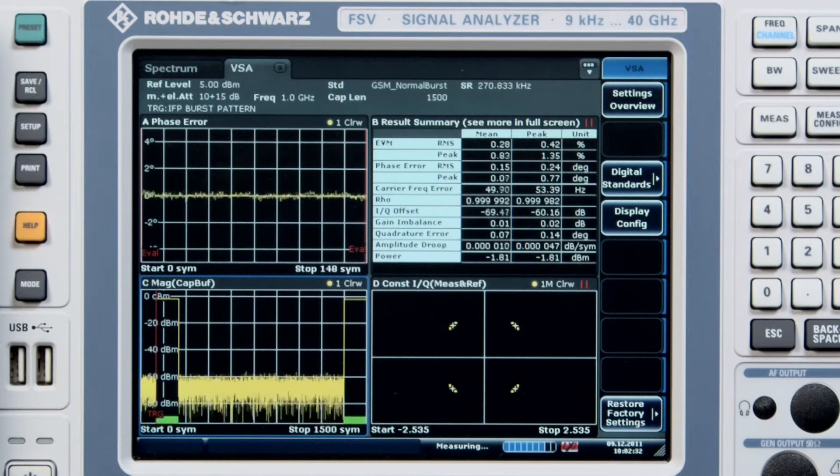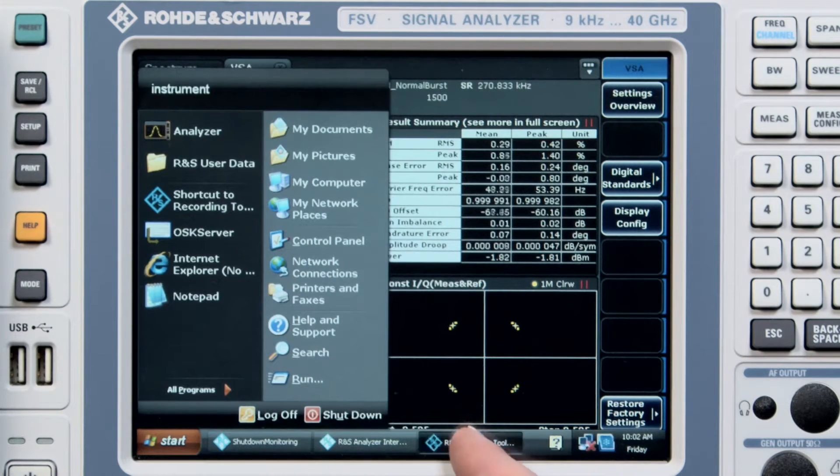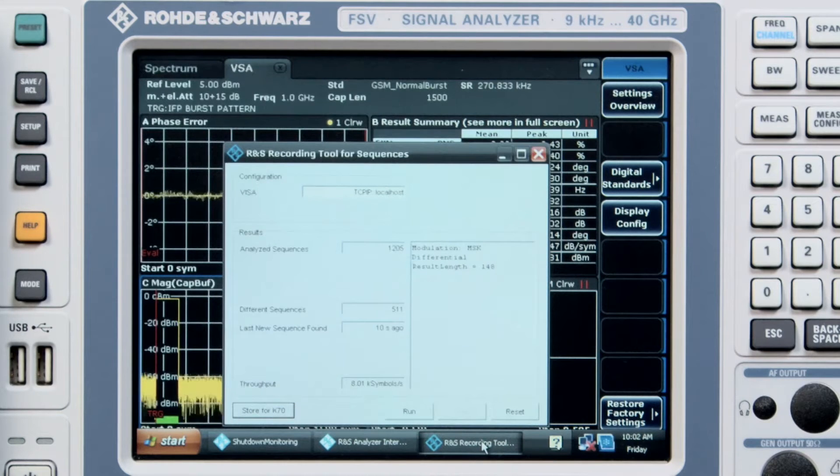To do a bit error rate measurement, the first thing we need to do is record a reference signal which has some data in it so that we can actually do the comparison or bit error rate calculation. There's a little utility that we run directly on the analyzer to capture that sequence.